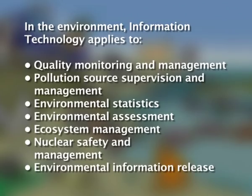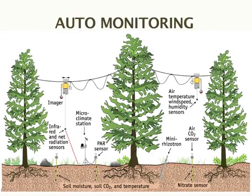In the environment, information technology applies for quality monitoring and management, pollution sources supervision and management, environmental statistics, environmental assessment, ecosystem management, nuclear safety and management, and environmental information release. Auto monitoring is widely used in environment quality monitoring and pollution source monitoring. It uses many information technologies such as online data collection equipment, data delivering technologies and data processing technologies.